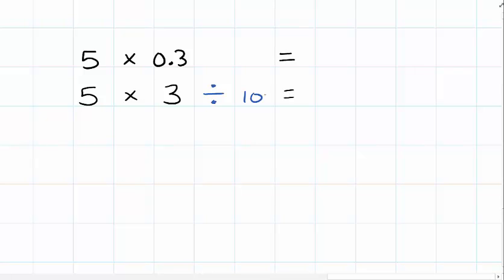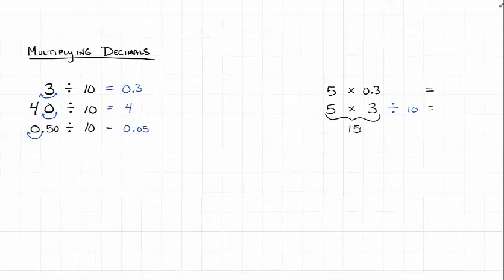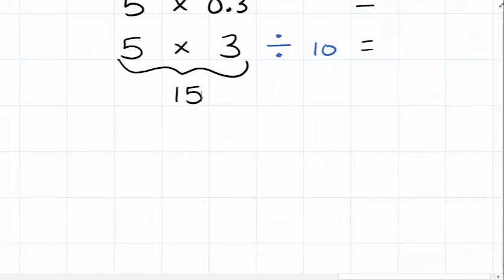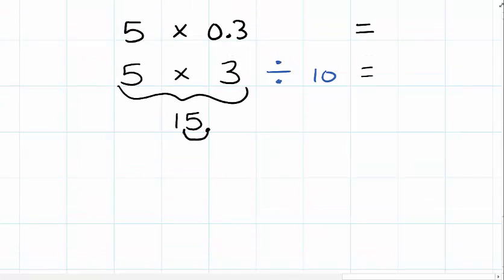I think everybody here can do 5 times 3. 5 times 3 gives us 15. Then if we take that 15 and remember what we did before, we divide it by 10, basically moving the decimal one place to the left in 15. We get our answer of 1.5. So 5 times 0.3 is 1.5.